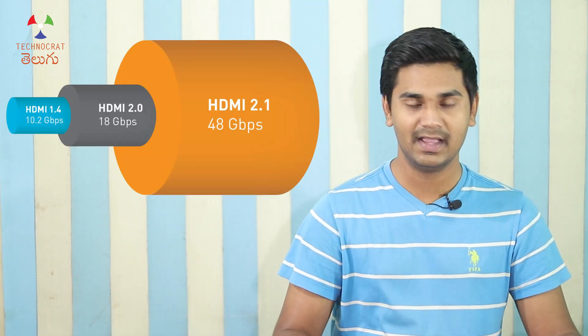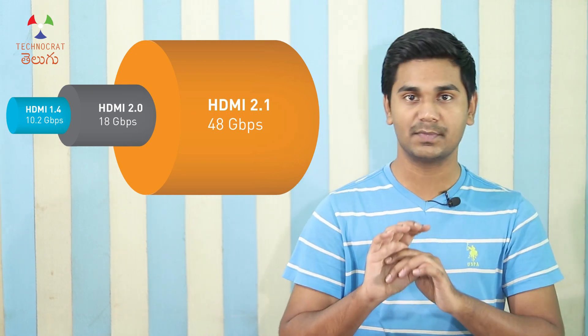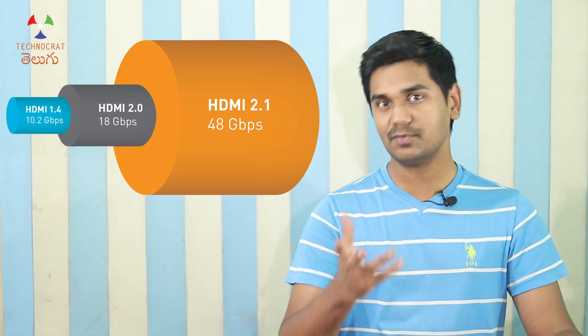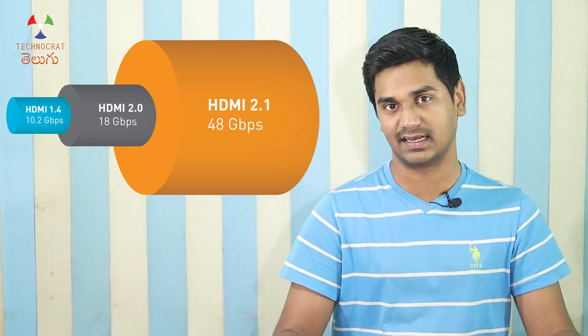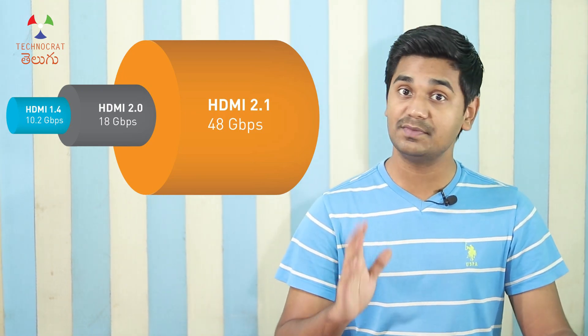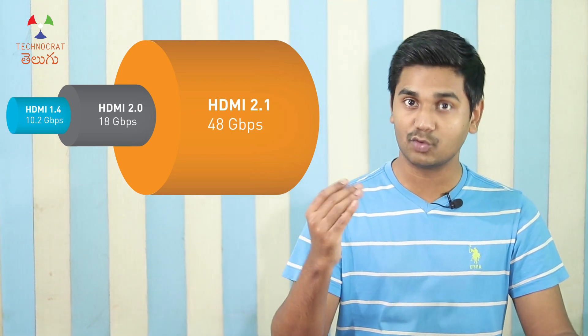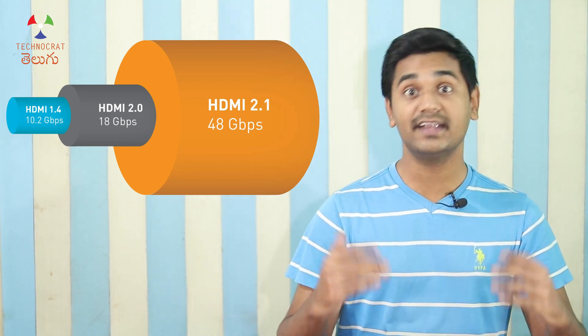Now let's look at each HDMI version in terms of resolution, frame rate, widescreen aspect ratio, color depth, and bandwidth. Bandwidth is like a water pipe — it determines how much data can be pumped per second. HDMI 1.4 has 10.4 Gbps of bandwidth. HDMI 2.0 has 18 Gbps. HDMI 2.1 has 48 Gbps.